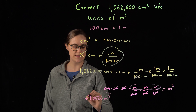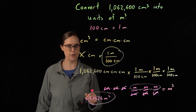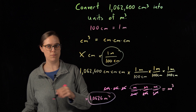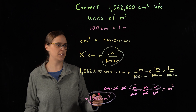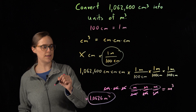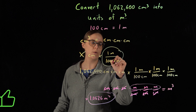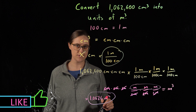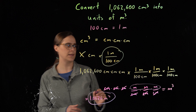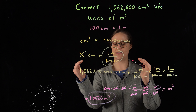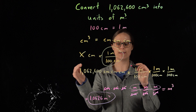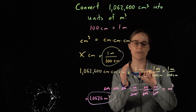We should get the same answer whether we convert each individual centimeter dimension into meters and then multiply length times width times height, or start directly with the volume in centimeters cubed. The key is that we need all three centimeters to cancel out, so we must apply the conversion factor three times.